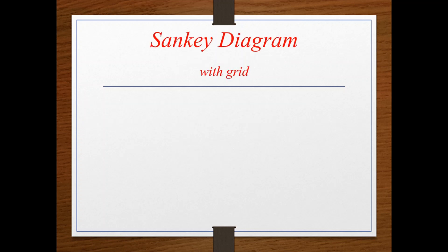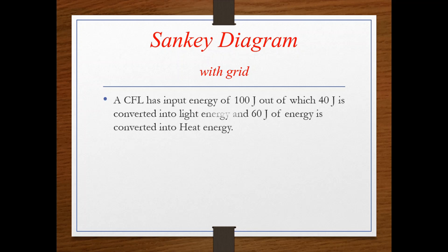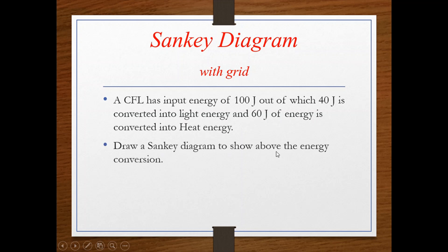Let's understand how to draw a Sankey Diagram with grid. Here is the first numerical: a CFL has input energy of 100 joule, out of which 40 joule is converted into light energy and 60 joule is converted into heat energy. Draw a Sankey Diagram to show the above conversions.